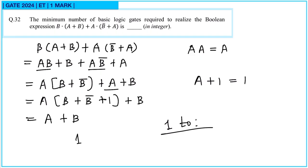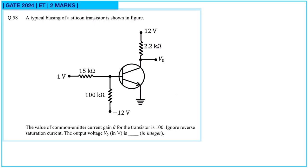Next question 58. A typical biasing of silicon transistor is shown in the figure. 1 volt is given, with a 15 kilohm resistor, and minus 12 volts with a 100 kilohm resistor. The common emitter current gain beta is 100. We have to find the output voltage, but first we need to calculate VB, the base voltage, due to the two input sources 1 volt and minus 12 volts. We will use the superposition principle.